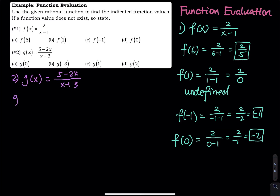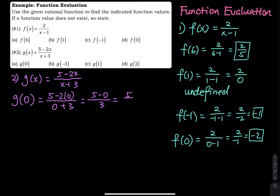When x is equal to 0, we have 5 minus 2 times 0 divided by 0 plus 3. So that is 5 minus 0 divided by 3. The answer is 5 over 3.